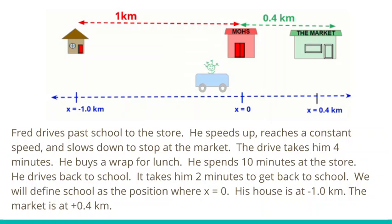We're going to start with this scenario. Fred is going to drive. He starts at his house. He drives past school to the store. He speeds up, reaches a constant speed, and slows down to stop at the market. The drive takes him four minutes. He buys a wrap for lunch. He spends 10 minutes at the store. He drives back to school.